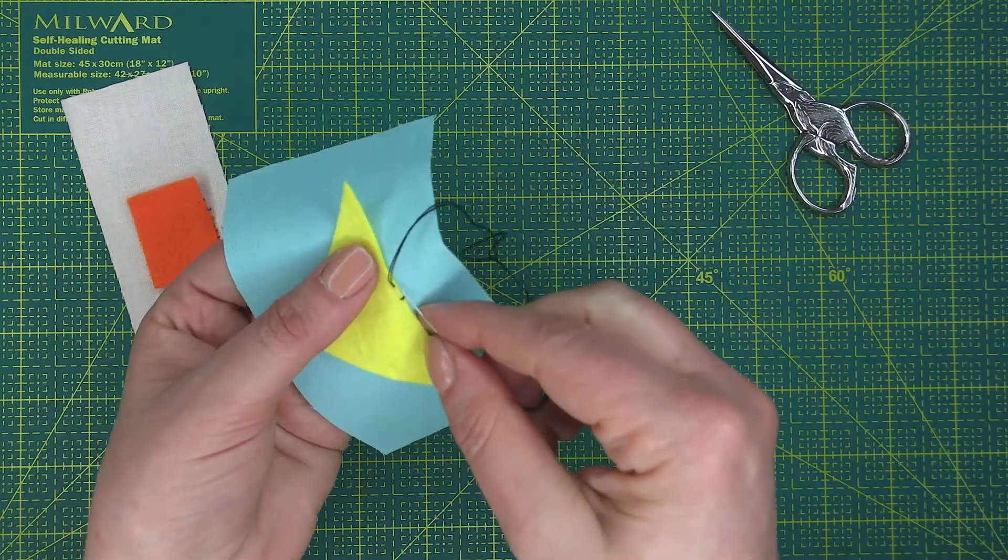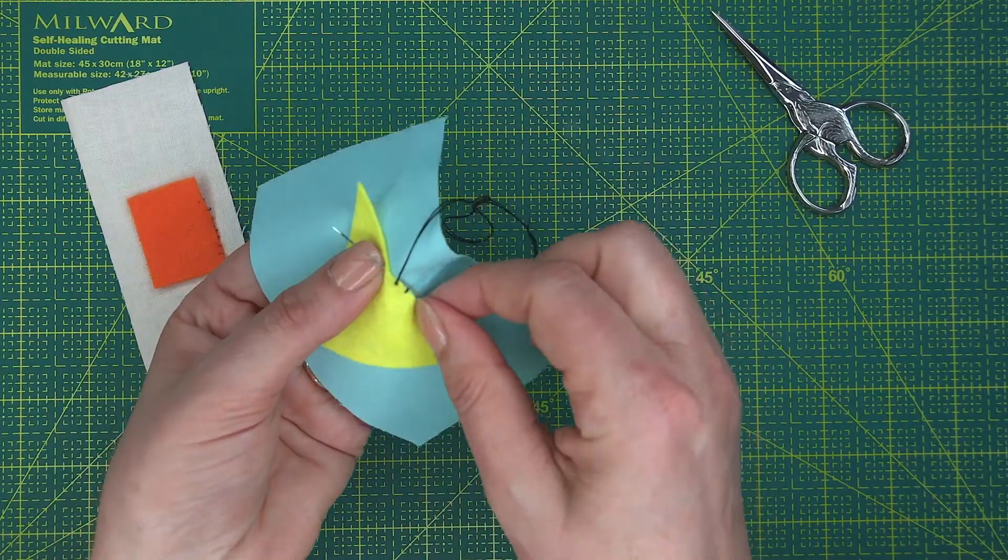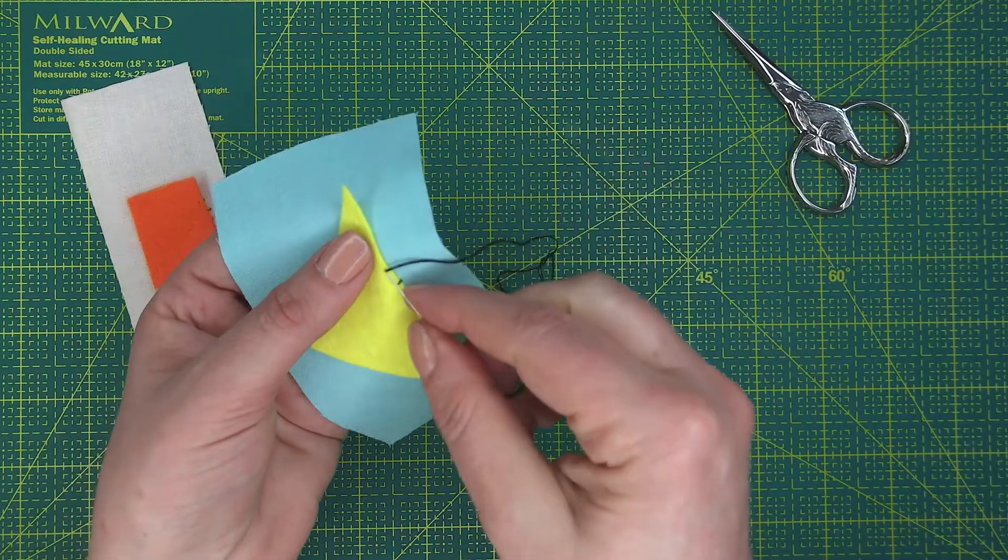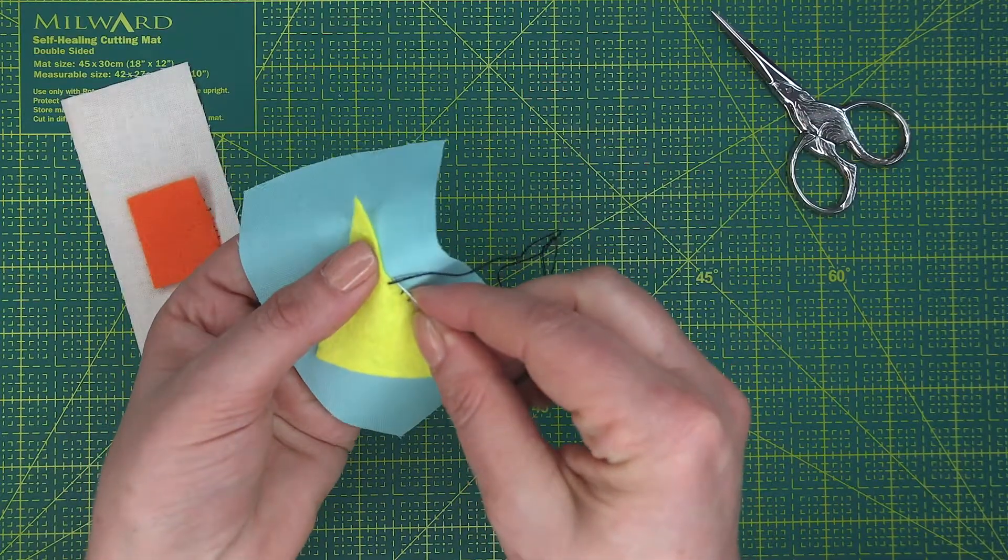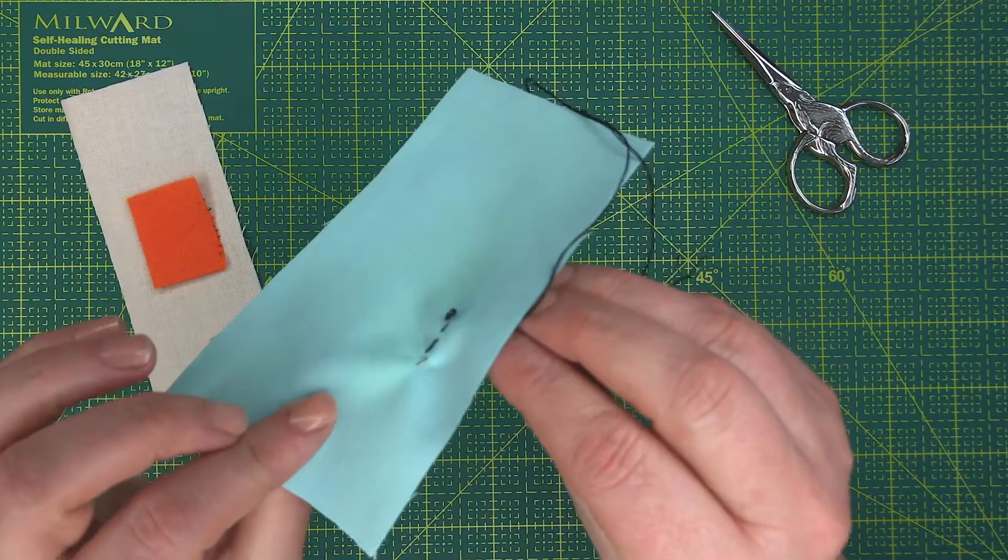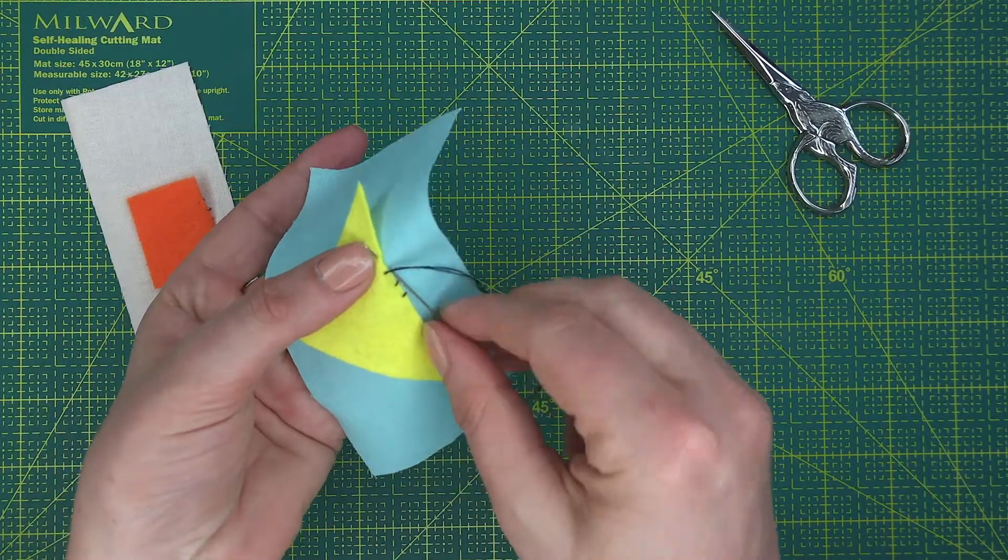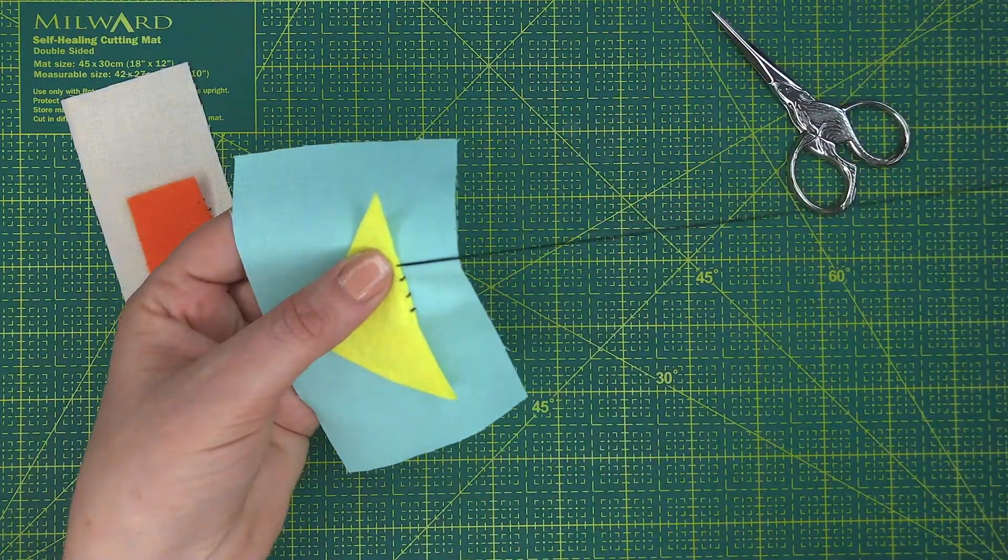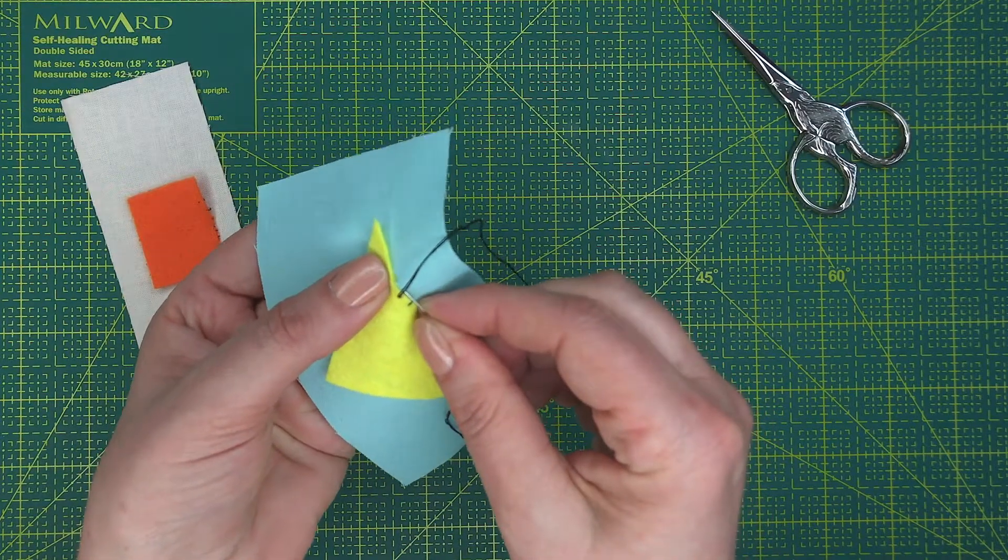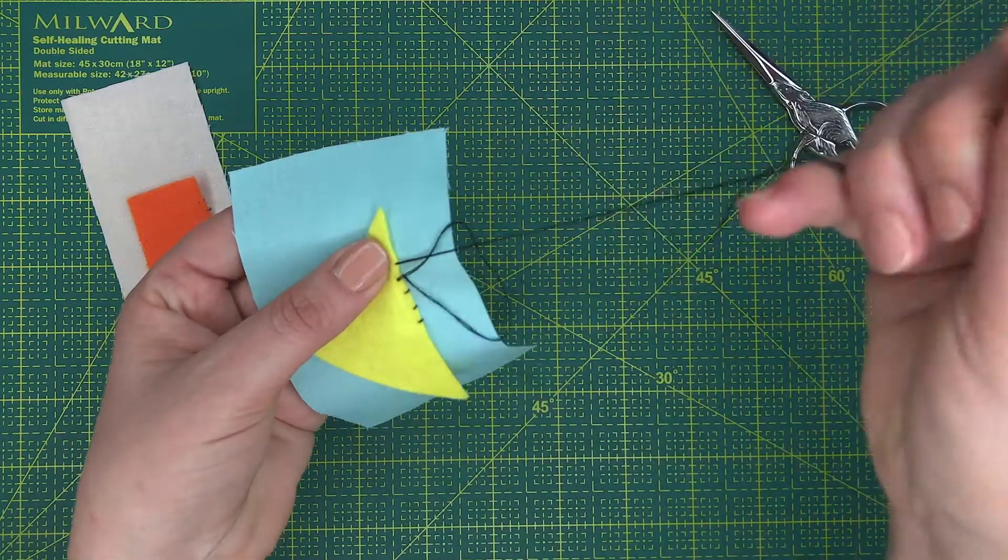You're basically working a stitch around that attaches the felt to the fabric. So straight over, pick up a piece of the blue, needle at an angle. You can see here it's at the back at an angle and it picks up a little bit of the yellow. Again, straight across, pick up a little bit of the blue, angle, come out, pick up a little bit of the yellow.